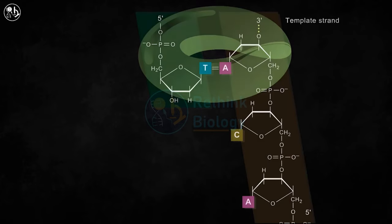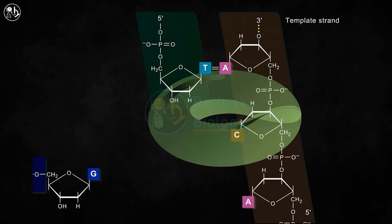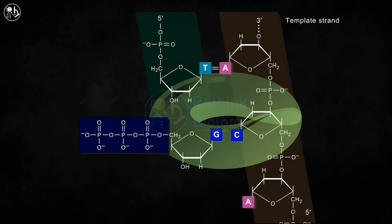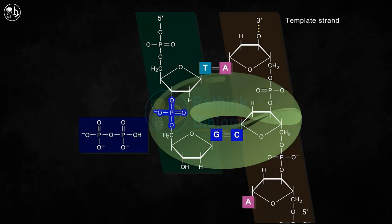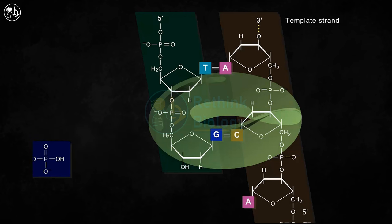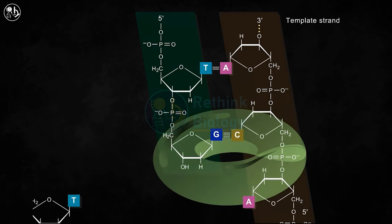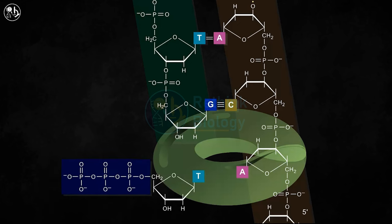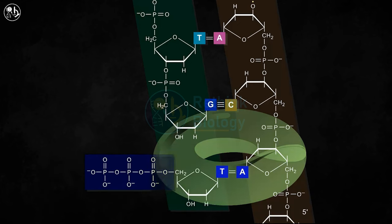An enzyme named DNA polymerase comes and selects the nucleotide to form complementary base pairing with the nucleotide of the template DNA strand. After that, a phosphodiester bond forms between the three prime end of the new strand and the five prime phosphate of the precursor base by the help of DNA polymerase, and two phosphates from the precursor are released as a result of this bond formation. As the DNA polymerase moves from the three prime to five prime direction along the template, the process gets repeated.